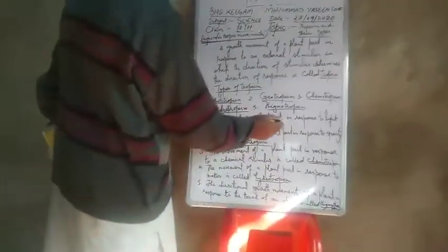First, we will see what is phototropism. The movement of a plant part in response to light is called phototropism. The movement of a plant part in response to gravity is called geotropism. The movement of a plant part in response to water is called hydrotropism. The directional growth movement of a plant in response to the touch of an object is called thigmotropism. These are the five types of tropisms.